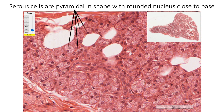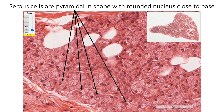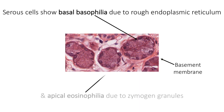Secretory end pieces of the acini are of three types: serous type, mucous acini, and the mixed acinus. Serous acini are usually spherical in shape and are lined by protein-secreting serous cells. Serous cells are pyramidal in shape with a rounded nucleus close to the base, as shown by the arrows here. Serous cells show biphasic staining — basal basophilia and apical eosinophilia. The presence of rough endoplasmic reticulum and free ribosomes results in the basophilic staining of the basal cytoplasm, whereas zymogen granules result in acidophilic staining of the apical cytoplasm.